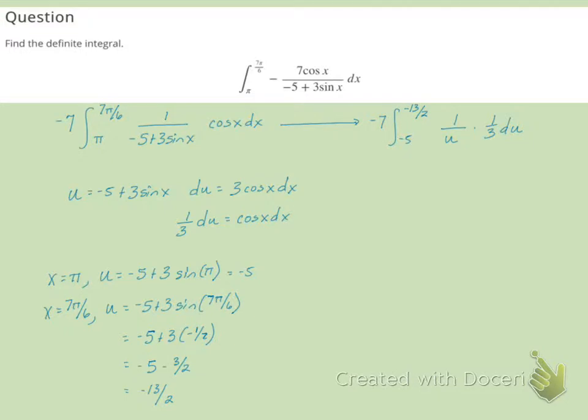Bringing that 1 third out in front, we'll get negative 7 thirds integral from negative 5 to negative 13 halves of 1 over u du.